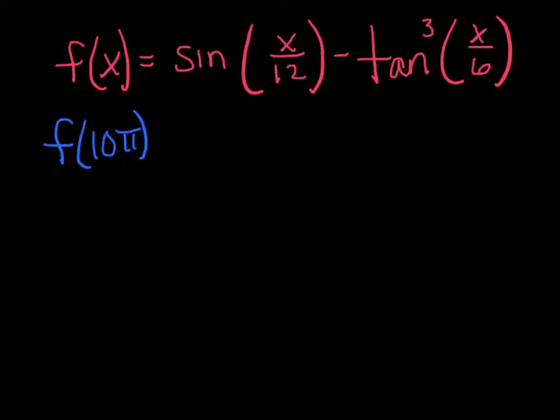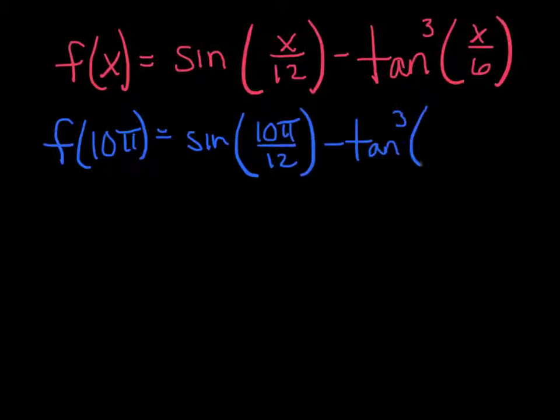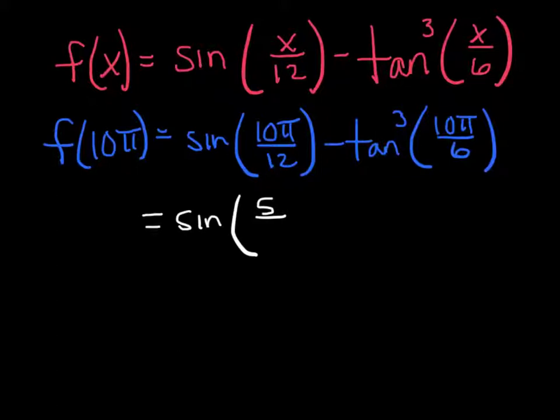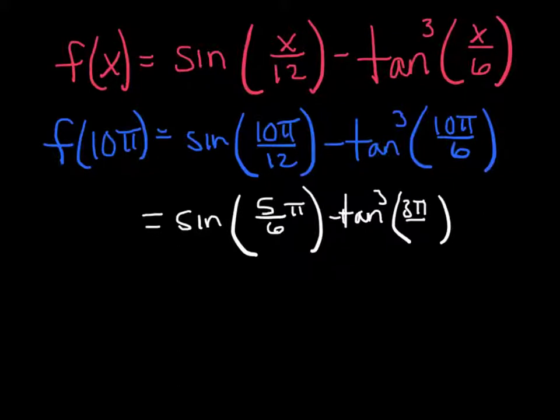One more example here. F of x equals the sine of x over 12 minus tangent cubed of x over 6. Find f of 10 pi. So same idea. I'm going to replace every x with 10 pi. And I'm going to go through and clean it up so that they look recognizable. Those are divided by 2, so that's 5 pi over 6 minus the tangent cubed. I can divide those by 2, so that's 5 pi over 3. So now I've got to carefully evaluate. Look for the reference angle.